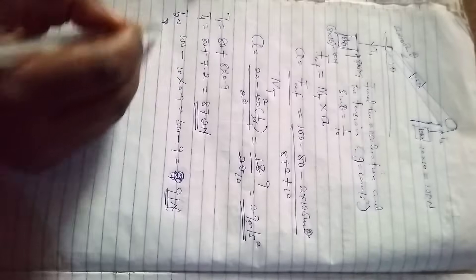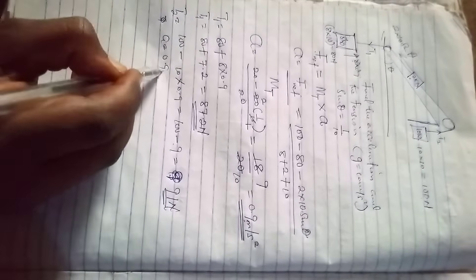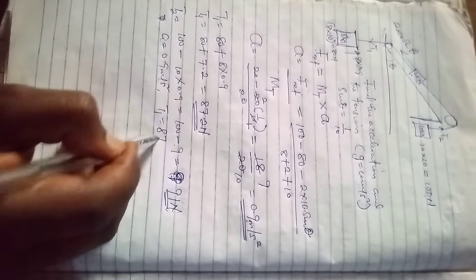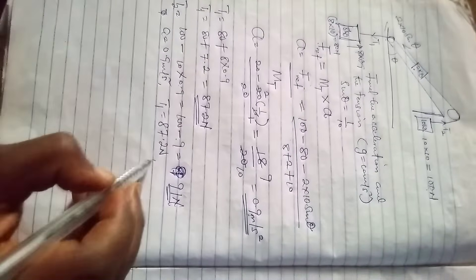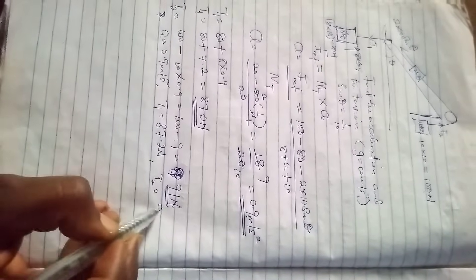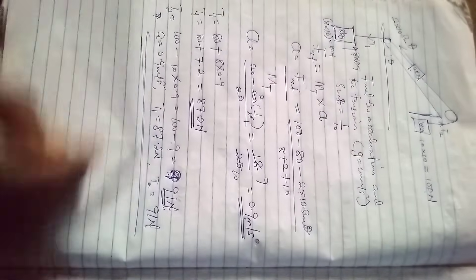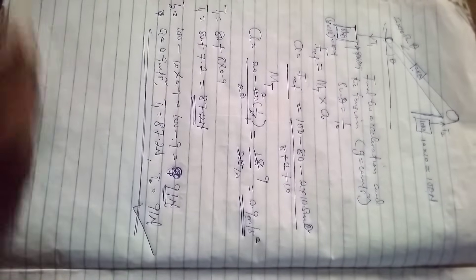So our acceleration is 0.9 meter per second square. Our T1 is 87.2 Newton. Our T2 is 91 Newton. So this is the solution of the assignment given to us.